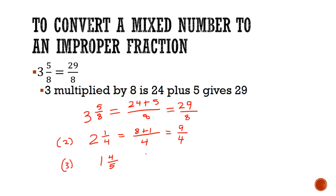And a third example: 1 and 4 over 5 is the same as 1 multiplied by 5 plus 4. 1 multiplied by 5 is 5. 5 plus 4 is 9. 9 over 5.